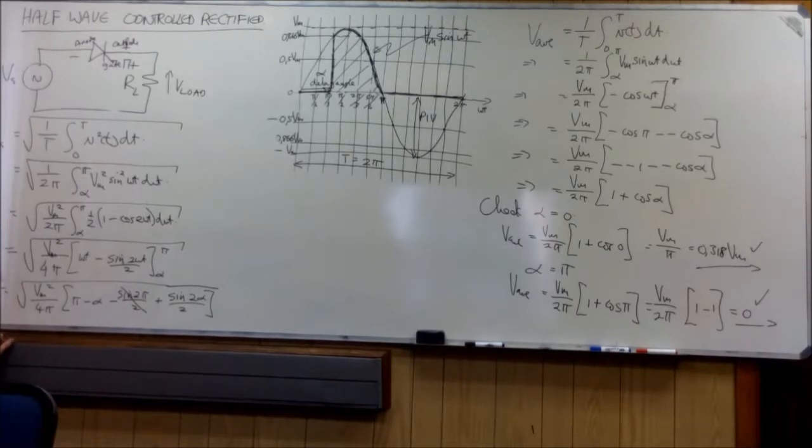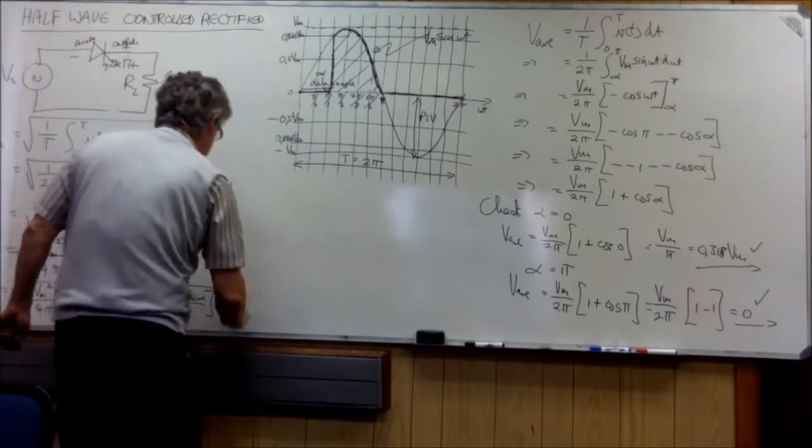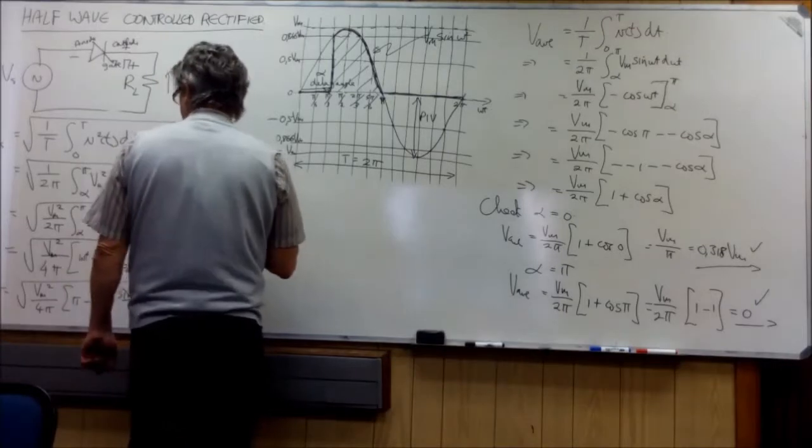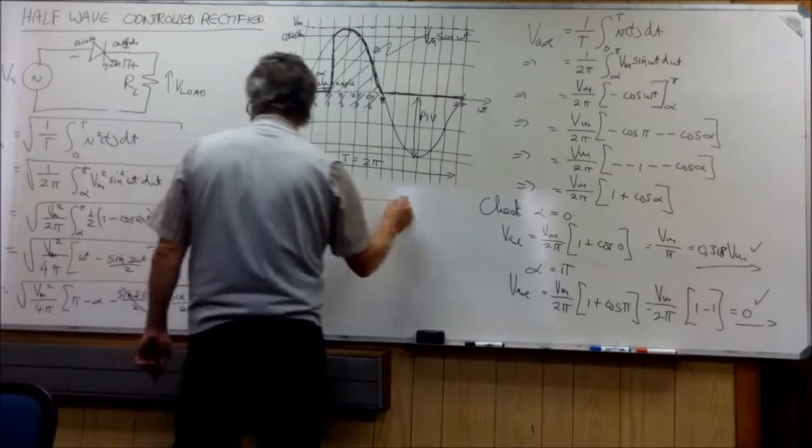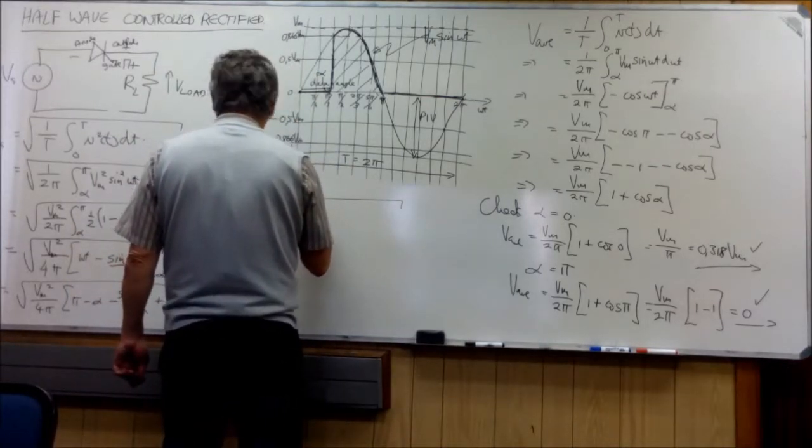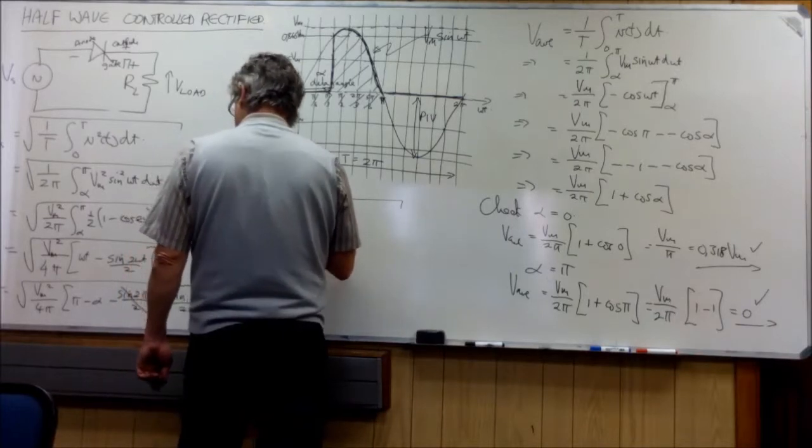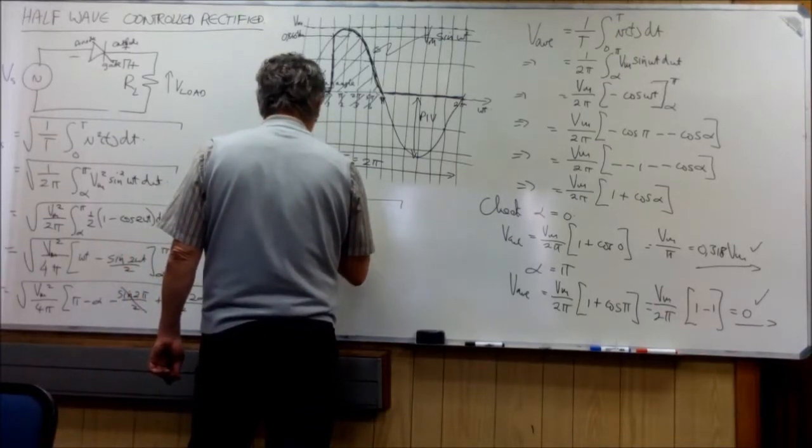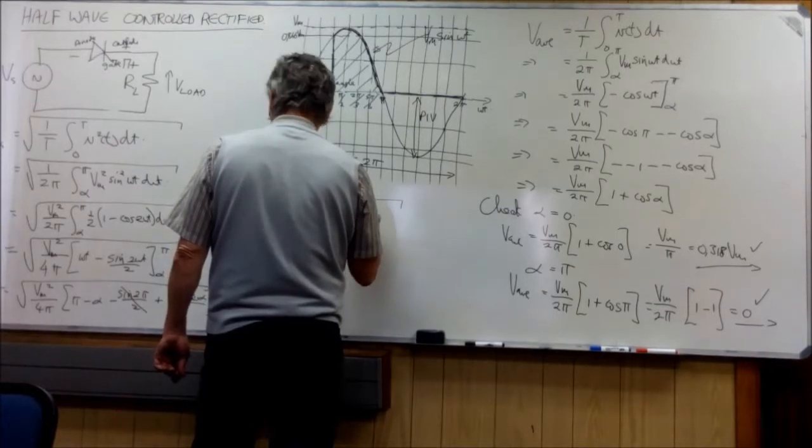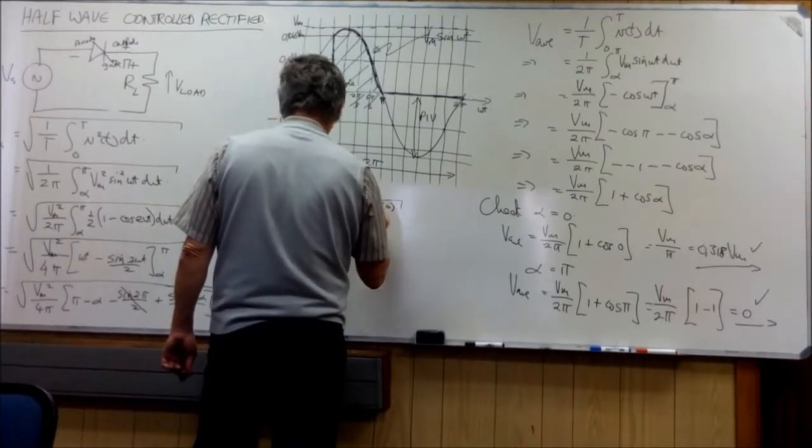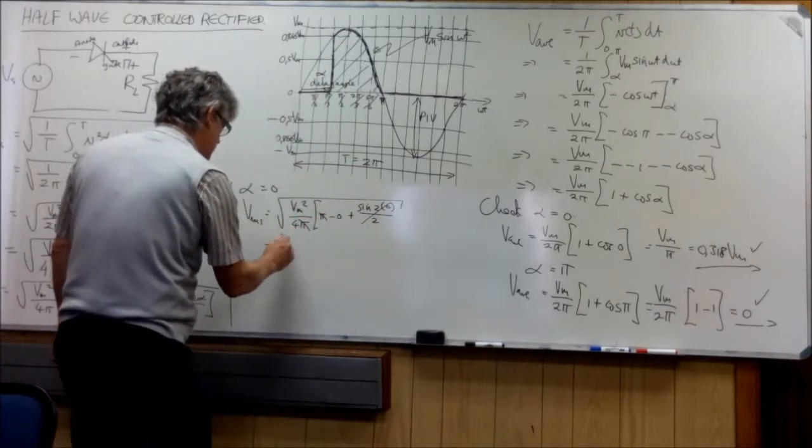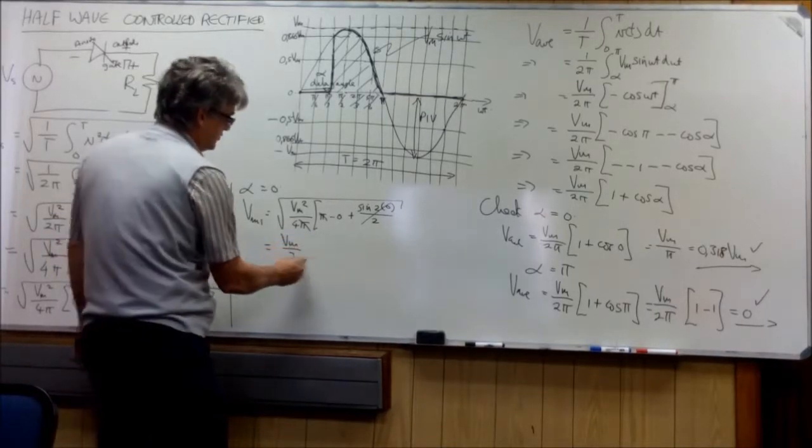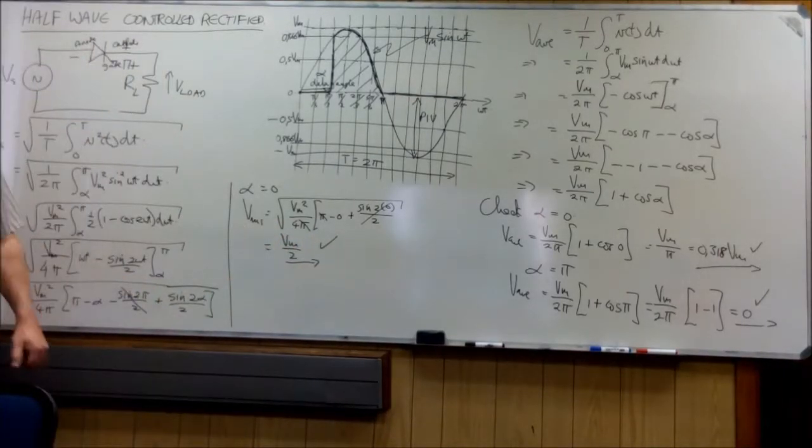And now let's test. Okay. So we apply alpha is equal to zero. And we say that v rms is equal to v max squared over four pi. And then it is pi minus zero plus the sin of two times zero over two. Which is also zero. So that one, they cancel that one. And we get v max over two. Which we just proved an hour ago was correct.